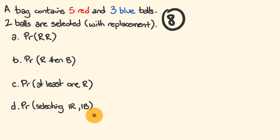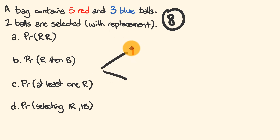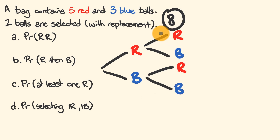A tree diagram will have two different events — each time we choose a ball is a different event. Because we're talking about two different things and we could choose either red or blue, it's going to break into two parts each time. On the first selection we could choose red or blue, and on the second event we could again choose red or blue, breaking down all the possible outcomes.